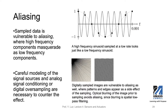Aliasing is related to sampling. I will talk about sampling when we discuss the analog-to-digital converter. When you have these sensors, they often produce a continuous voltage signal. To process these signals, you need to sample them so you can have discrete values for digital systems to process — that's called sampling. Sample data is vulnerable to aliasing, which means that high frequency components masquerade as low frequency components.